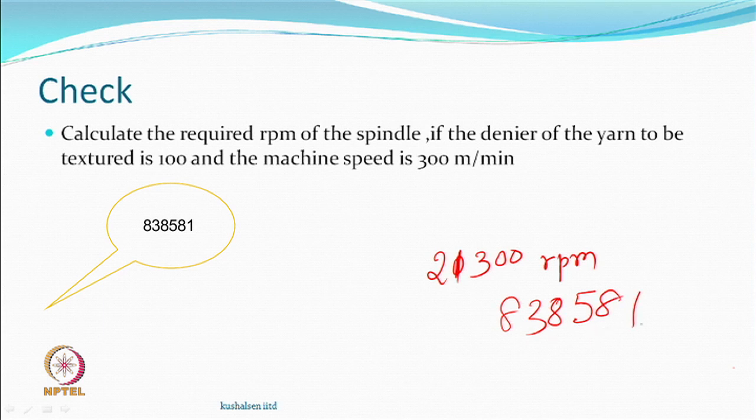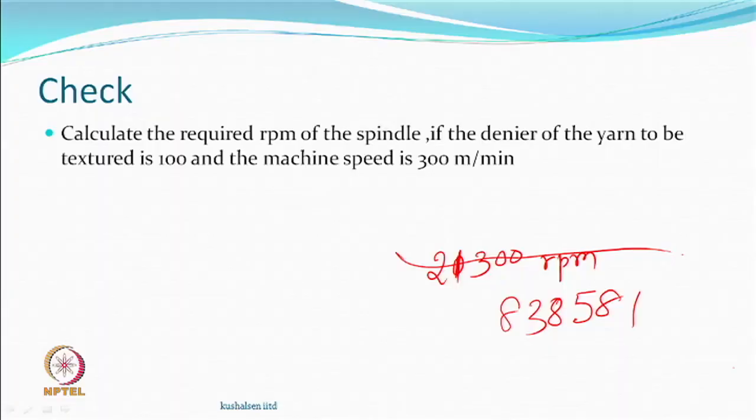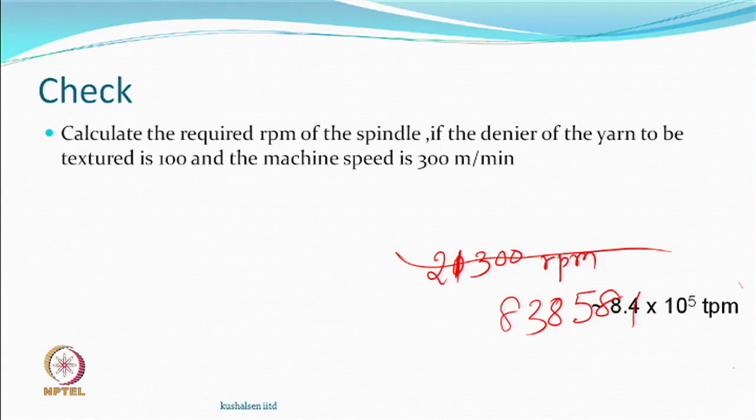So the approximate answer is coming out to around 838,000 RPM — on the order of 10 to the 5th. Now if you change the machine speed to 600 meters per minute, it is not just the time reducing; you are also asking the spindle to rotate that fast. This is not to test your calculation skills, but to give an appreciation of how extraordinarily high the spindle RPM requirements are, and you are supposed to optimize this with such little time and at such high speeds.